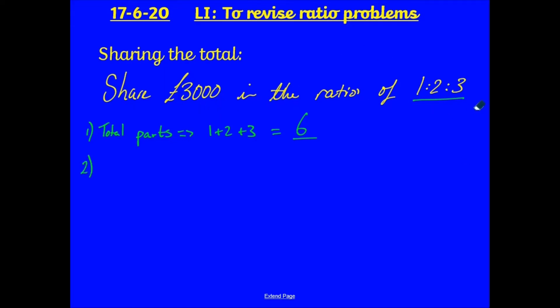So, step number 2. Find 1 part. The value of 1 part. So, that's going to be £3,000 divided by 6. Well, if I know that 30 divided by 6 is 5, 300 divided by 6 is going to be 50. So, 3,000 divided by 6 is going to be £500.